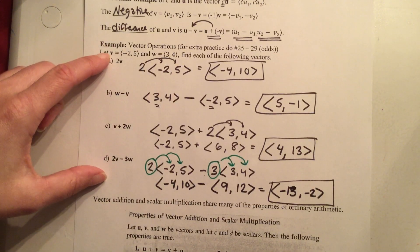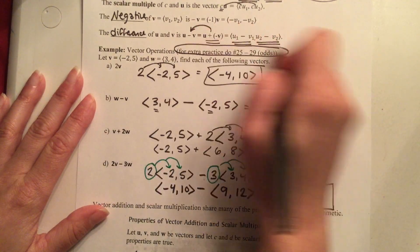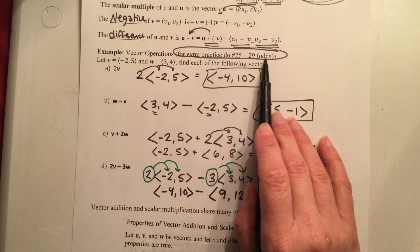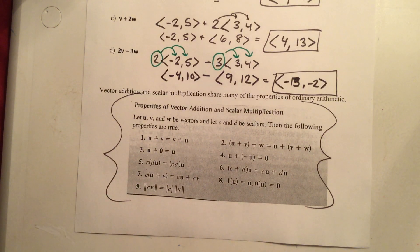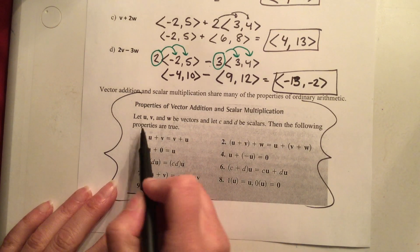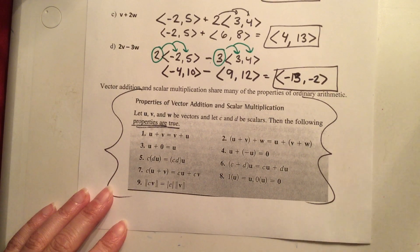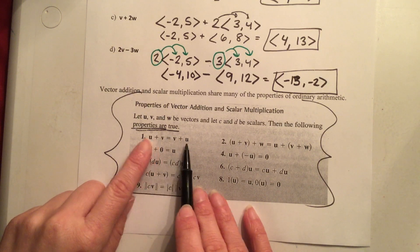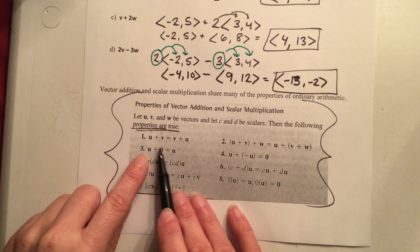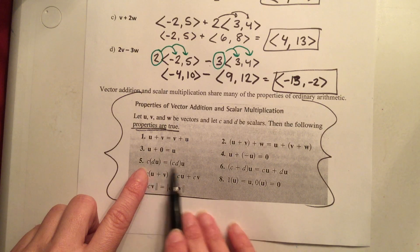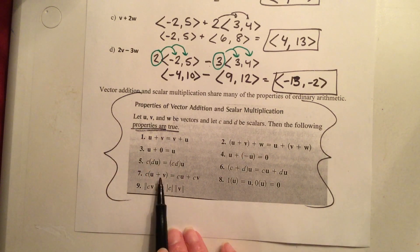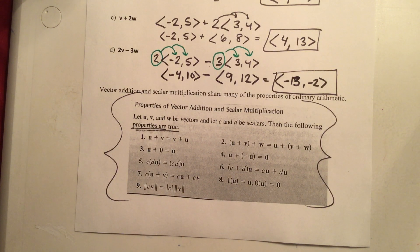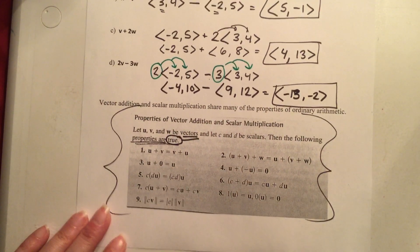If you want more practice on vector operations, problems 25 to 29 odds in the textbook are great. To close out, here's another chart from your book — properties of vector addition and scalar multiplication. These properties have been with you since fifth grade and they continue when working with vectors: the commutative property, additive identity, associative property, additive inverses, and the distributive property. All of these hold true for vectors too.